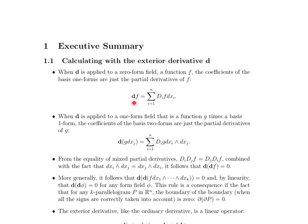So if you're looking at, say, f as a 3-variable function — maybe x1, x2, x3 are the variables — when you apply the exterior derivative to it, you'll end up with the derivative with respect to the first variable times dx1, plus the derivative with respect to the second variable times dx2, plus the derivative with respect to the third variable times dx3.